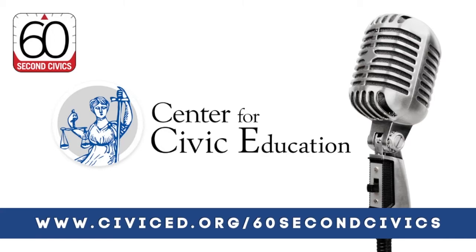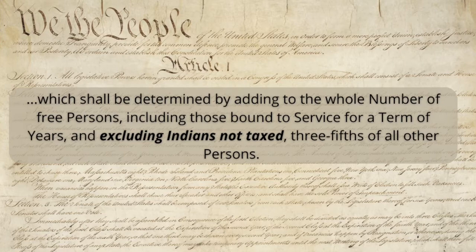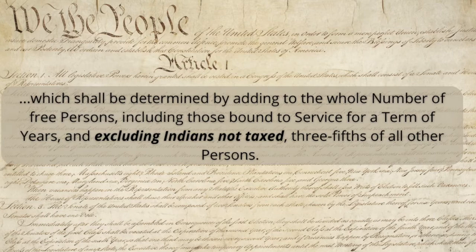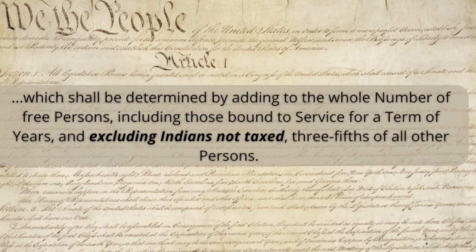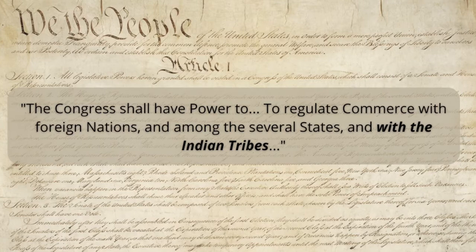The Constitution mentions Native Americans as Indians twice. Under Article 1, Indians not taxed — those who remained under tribal government — were excluded from state populations for purposes of apportioning taxes and determining representation in Congress. Article 1 also empowered Congress to regulate commerce with foreign nations, and among the several states, and with the Indian tribes.